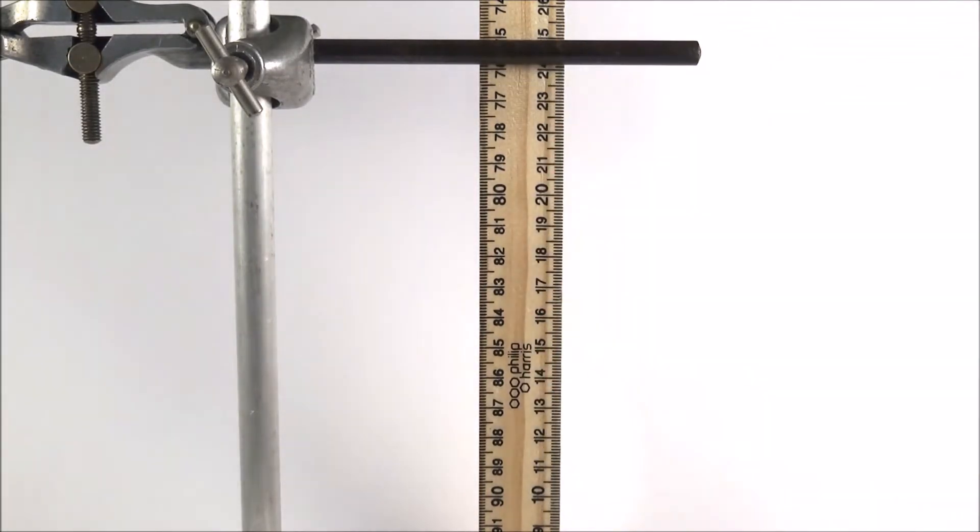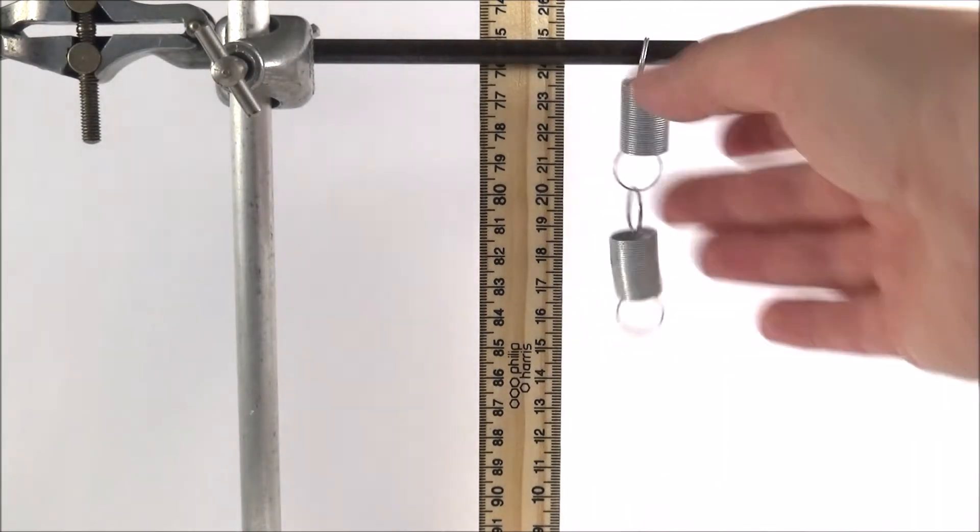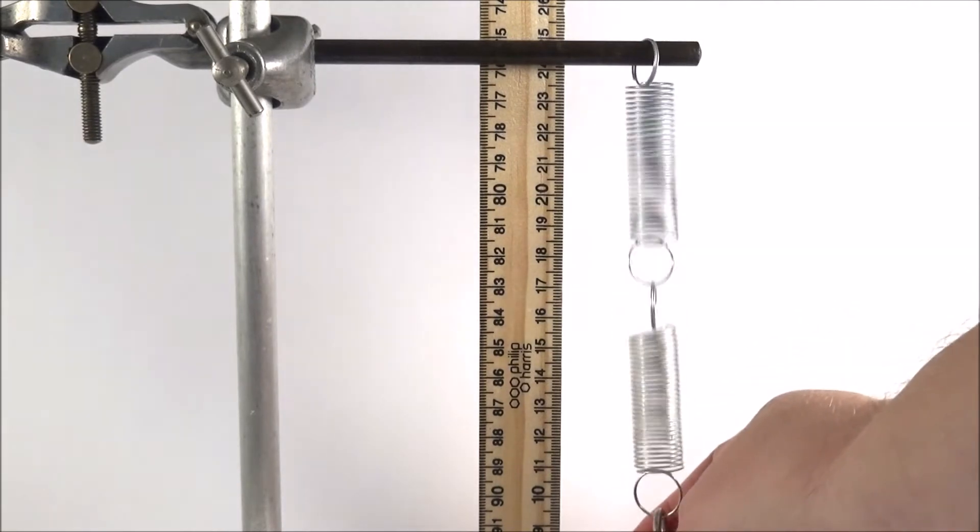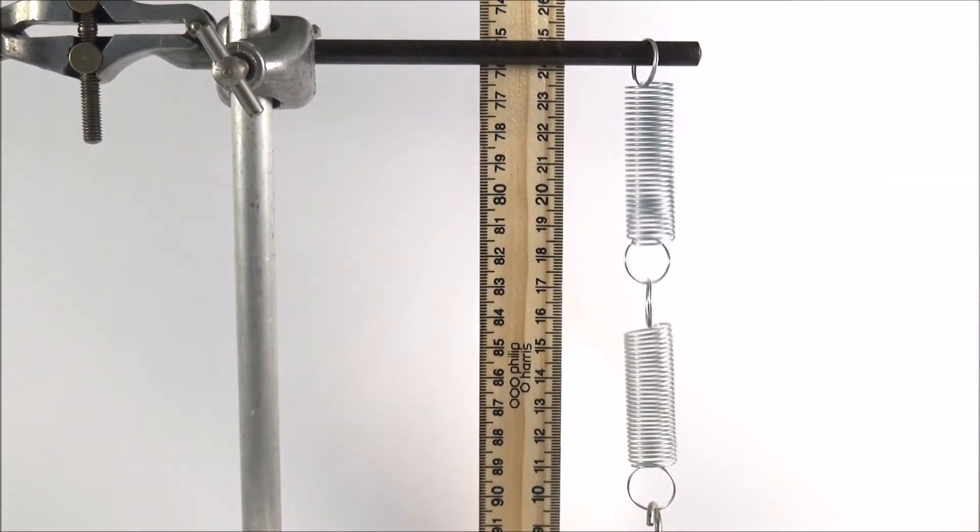You just simply repeat that for a number of different springs in series. You can then record your data for n, the number of springs, and also x, your extension. You can then plot this and then do your own analysis of that data.